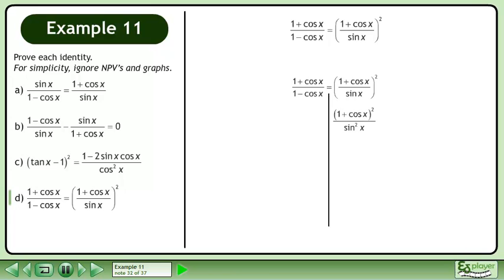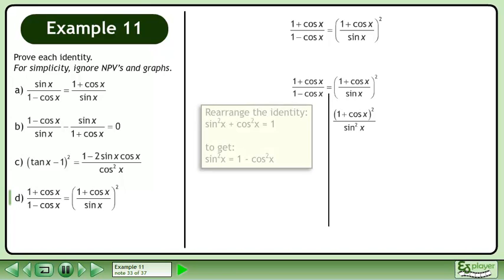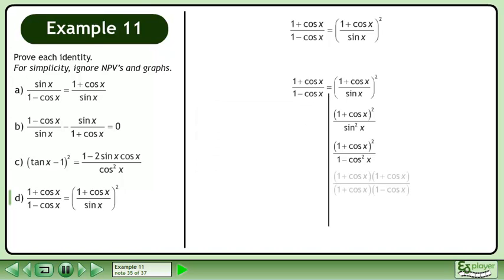Square the right side. Rearrange the identity sin²x plus cos²x equals 1 to get sin²x equals 1 minus cos²x. Replace sin²x with 1 minus cos²x. The numerator can be written as (1 plus cosx) times (1 plus cosx). The denominator can be factored as a difference of squares to get (1 plus cosx) times (1 minus cosx). Cancel. The left side equals the right side, completing the proof.